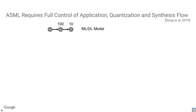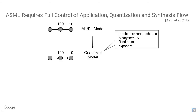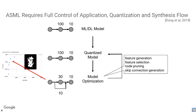One drawback of application-specific architecture is the need for pre-training quantization — you must think about training from the beginning. I tell people: train your original model without any quantization first, because if that model doesn't train well you want to know up front. Quantization can only make results worse, never better. Then apply quantization — we have several types: stochastic, non-stochastic, binary, ternary, fixed-point, and exponent quantization. There is also an opportunity to do model optimization together with quantization.